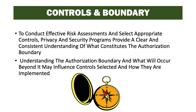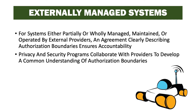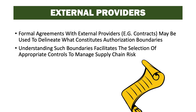We also need to think about how the system connects to other systems, since connected systems may provide protections or introduce additional risk. For systems partially or wholly managed, maintained, or operated by external providers, an agreement clearly describing authorization boundaries ensures accountability. Privacy and security programs collaborate with providers to develop a common understanding of boundaries. Formal agreements, including contracts, may be used to delineate authorization boundaries, and understanding such boundaries facilitates the selection of appropriate controls to manage supply chain risk.